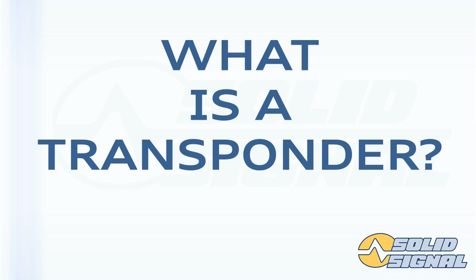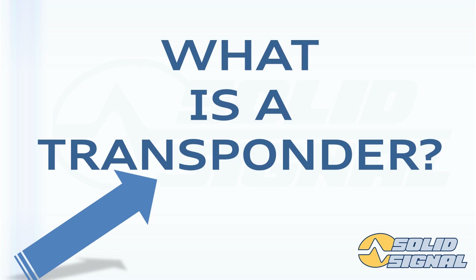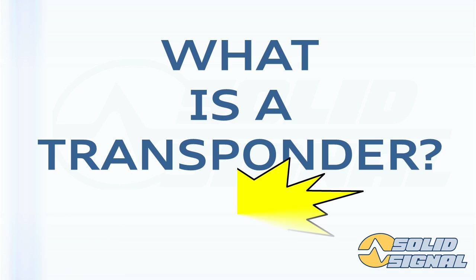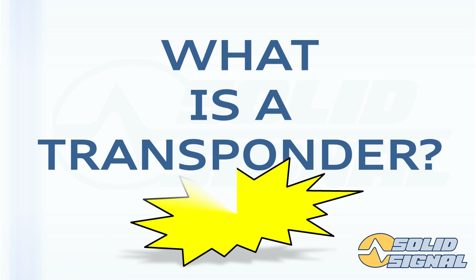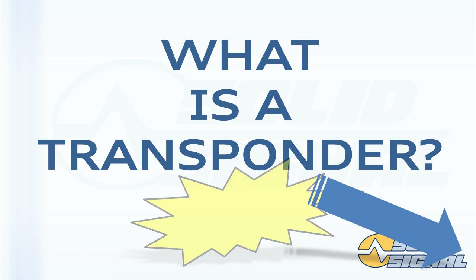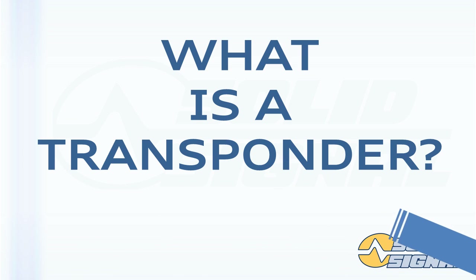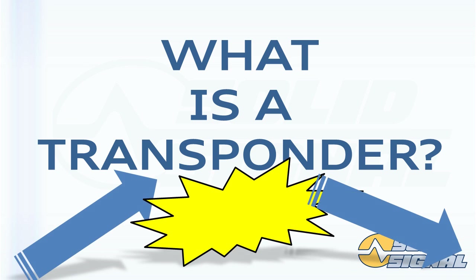Let's talk a little bit more about transponders. Transponder is a word that means transmitter and responder. In other words, there's a transmission from Earth, it gets processed, it gets thought about, and then after that it gets responded to or sent back to Earth. This happens millions of times a second — so fast that you don't even know about it.